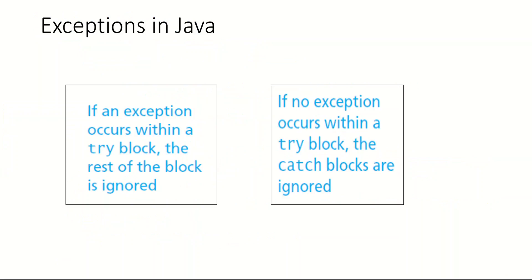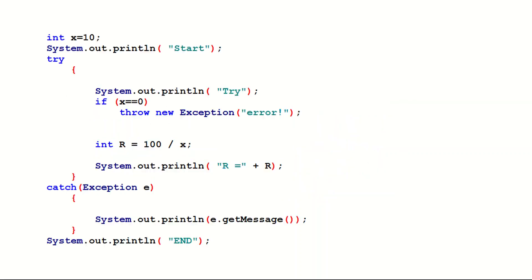In general, the rules are: if an exception occurs within the try block, the rest of the try block is ignored and execution jumps to the catch block. If no exception occurs within the try block, the catch block is ignored and execution continues normally through the try block.